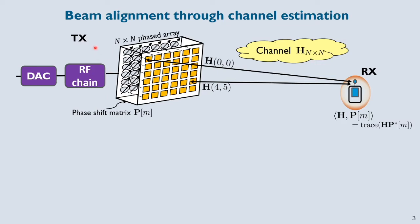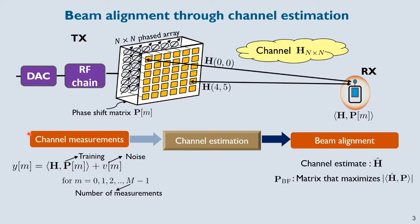In this system, I consider a transmitter equipped with an N-cross-N planar phased array and a single antenna receiver. The channel between the two ends is modeled using a matrix H of size N-cross-N, where H represents the channel response between each transmit antenna and the receiver antenna. Beam alignment through channel estimation occurs as follows: first there's a channel measurement phase where the transmitter applies a sequence of phase shift matrices and the receiver acquires channel measurements. Then the channel is estimated from the received measurements, and beam alignment becomes trivial — it's just a matter of finding a phase shift matrix P that maximizes the inner product with H.